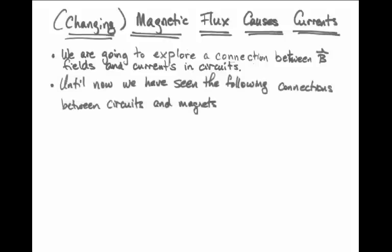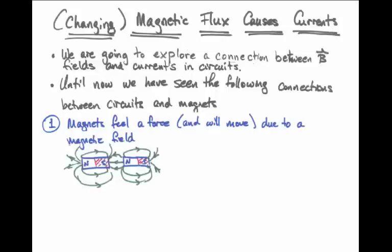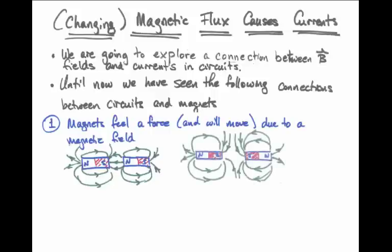Until now, we've seen the following connections between circuits and magnets. First, we've seen that magnets feel a force and will move due to a magnetic field. If we have two magnets nearby one another, their magnetic fields would interact and they would feel a force. The picture shown illustrates an attractive force between a north and a south pole from two different bar magnets, and another picture shows the repulsive force of two bar magnets where the south poles are facing one another.